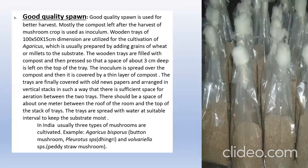Now, good quality spawn. Good quality spawn is used for better harvest. Mostly the compost left after the harvest of mushroom crop is used as inoculum. Compost mixed with mycelial pieces obtained from pure culture of the fungus is called spawning. In India, usually three types of mushrooms are cultivated: Agaricus bisporus, which is called button mushroom; Pleurotus, which is called sajur kaju or dhingri; and Volvariella volvacea, the paddy straw mushroom.